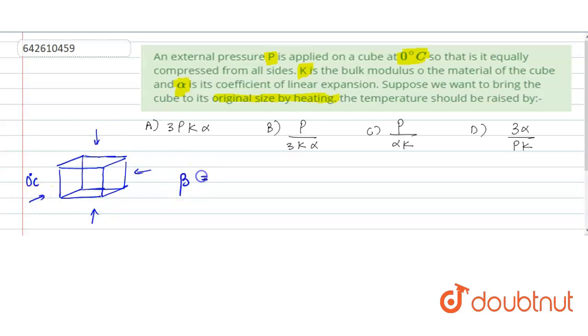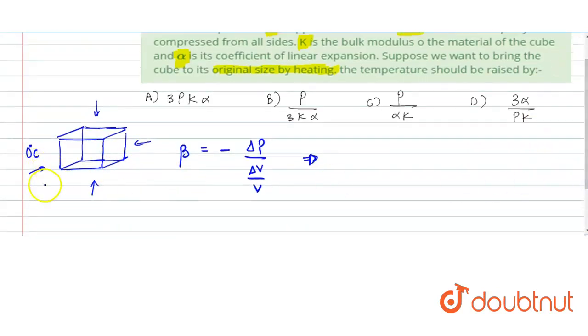So we can use the definition of bulk modulus beta is given by minus delta P divided by delta V by V which is normal stress upon volumetric strain. So on the application of the pressure P, it is equally compressed on all the sides. And since here volume is compressed, so that means delta V by V will be negative.